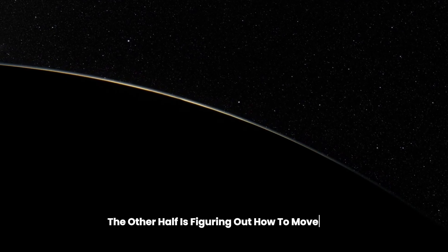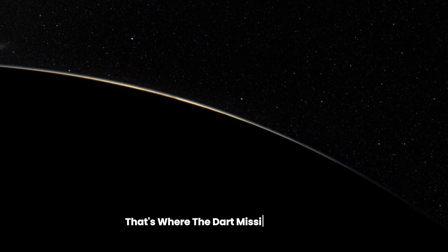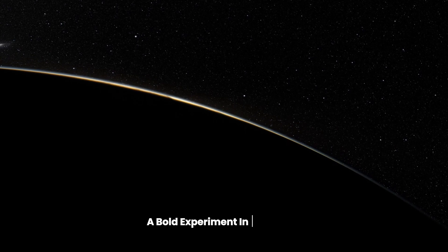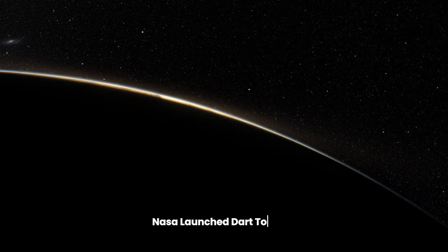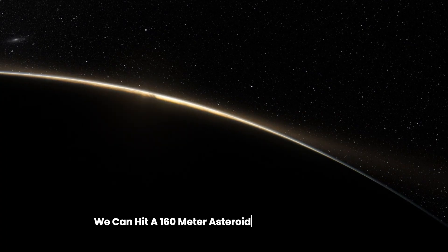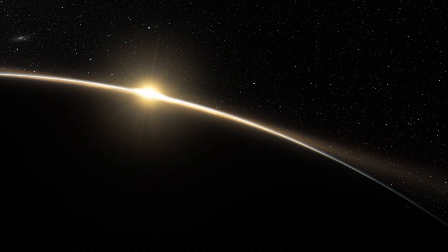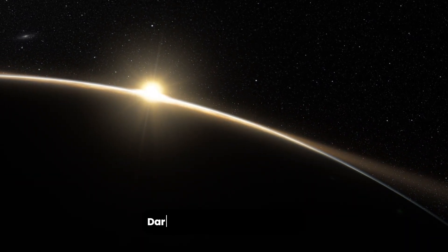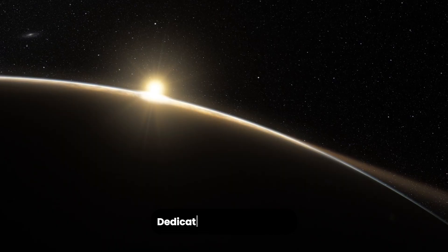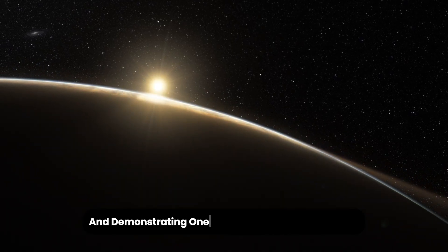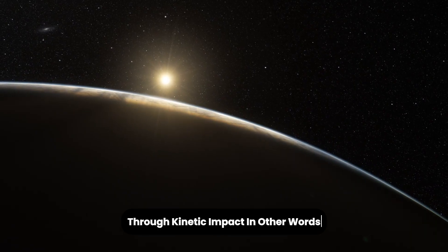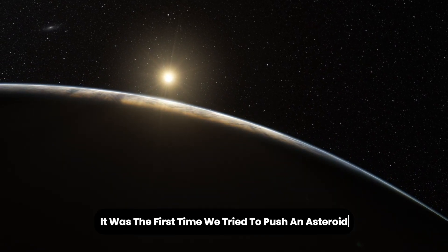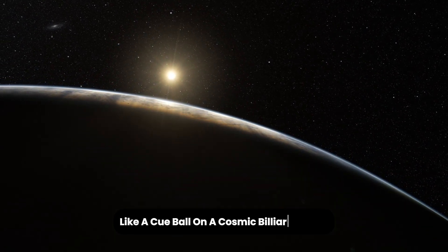But finding an asteroid is only half the plan. The other half is figuring out how to move one. That's where the DART mission comes in, a bold experiment in deflection. Instead of waiting for a crisis, NASA launched DART to show we can hit a 160-meter asteroid and change its path. As NASA scientists explain, DART was the first-ever mission dedicated to investigating and demonstrating one method of asteroid deflection through kinetic impact. In other words, it was the first time we tried to push an asteroid like a cue ball on a cosmic billiards table.